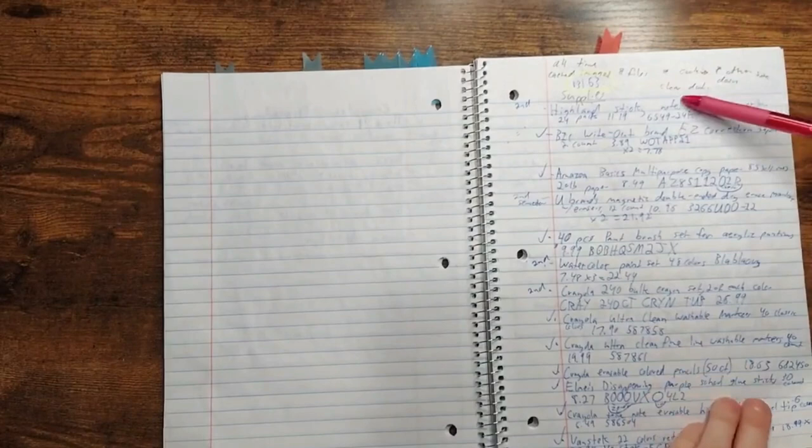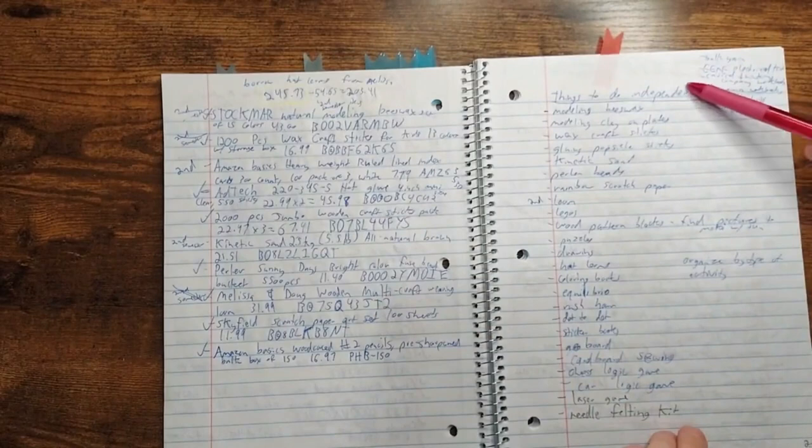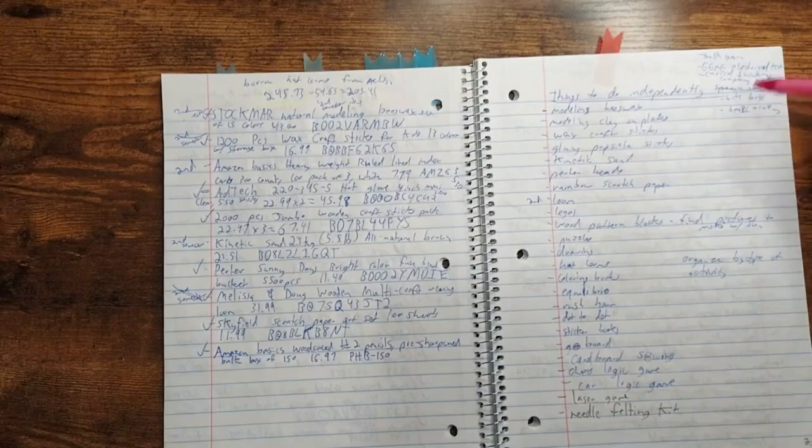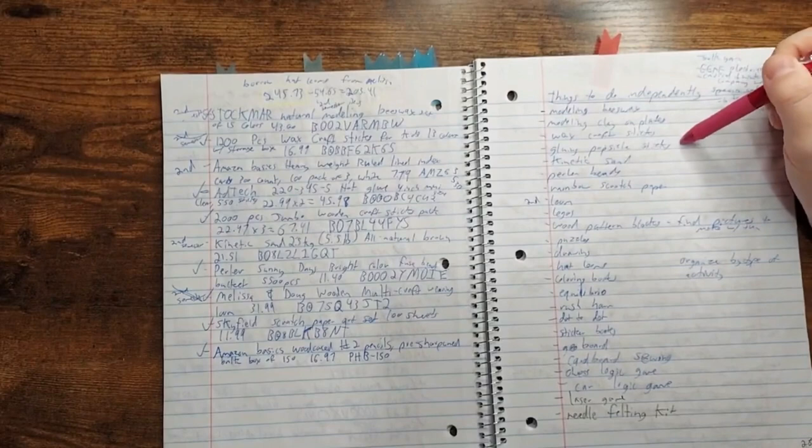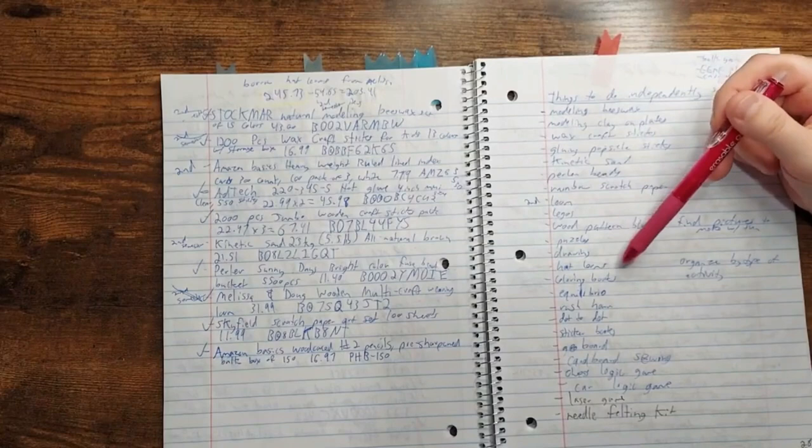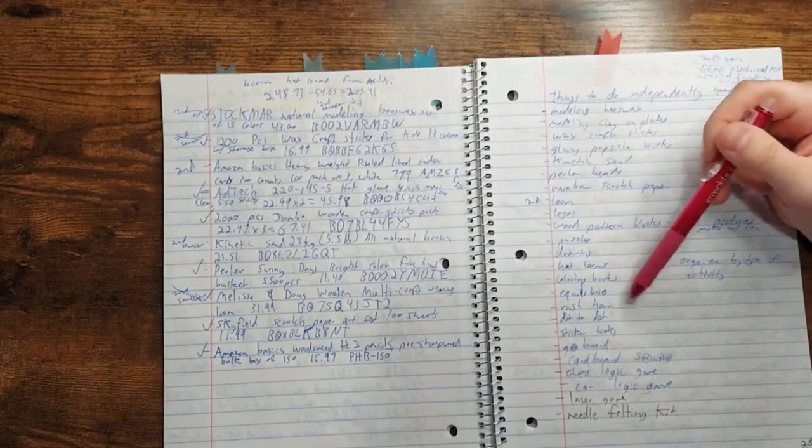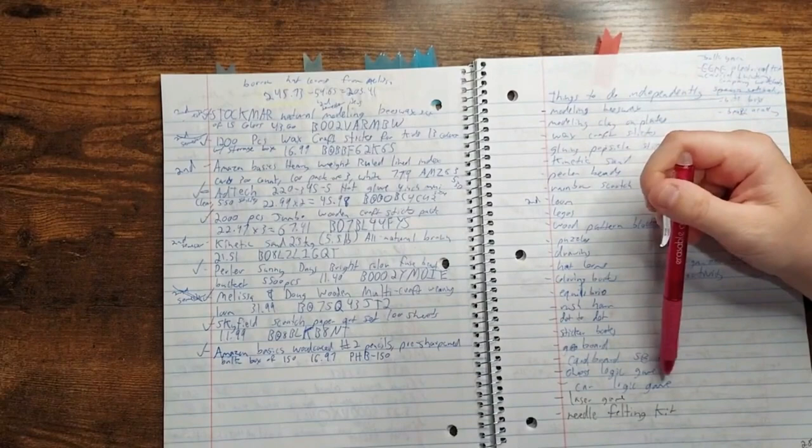Then I have supplies. Everything I needed where I was getting it, prices, and a little identifying number for each one so I can put my orders in and they order it for us. I have this list of things they can do independently while I read to them to keep them occupied because I have wild boys that like to wrestle. So I have modeling beeswax, modeling clay, and then using plates because we homeschool in our living room. We don't have a homeschool room. Waxcraft sticks, gluing popsicle sticks. My kids love doing that. Knick sand, perler beads, rainbow scratch paper, a listen.gloom, Legos, wood pattern blocks, puzzles, drawing, hat looms, coloring books, Equilibrio, Rush Hour. These are one-player logic games. Dot to dot, I found some that go over a thousand. Sticker books, geoboard. That's a board with little spikes you can put over bands and different designs. Cardboard sewing, chess logic game, car logic game, laser game. Again more one-player logic games. Needle felting kit.